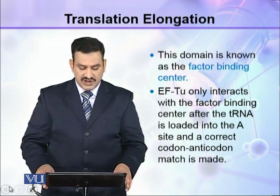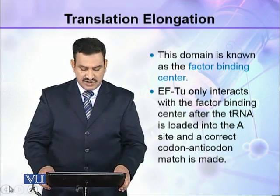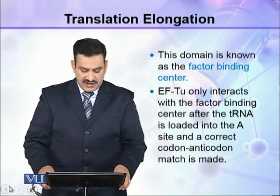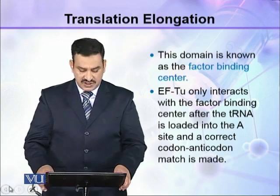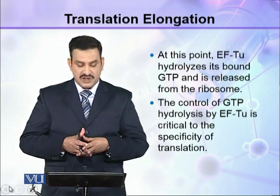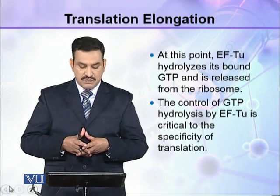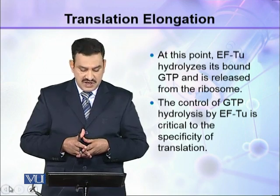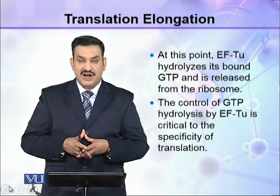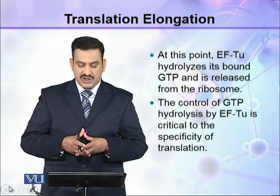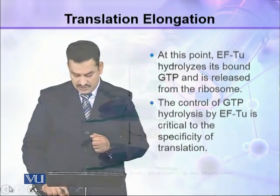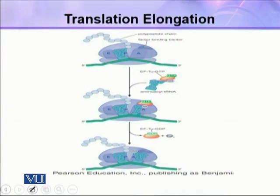EF-Tu only interacts with the factor binding center after the tRNA is loaded into the A-site and a correct codon-anticodon match is made. At this point, EF-Tu hydrolyzes its bound GTP and is released from the ribosome. The control of GTP hydrolysis by EF-Tu is critical to the specificity of translation.